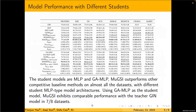Next we show some experimental results. First is the performance of MUXIE for different student model architectures. When using a GNN as the teacher model, MUXIE outperforms all state-of-the-art methods consistently. When using a one-hop JMLP as the student model, the performance is on par with the teacher GEN model in seven out of eight datasets.